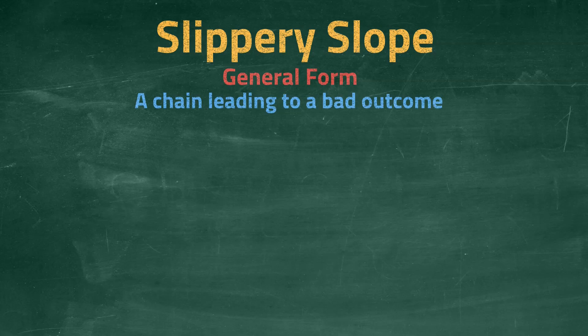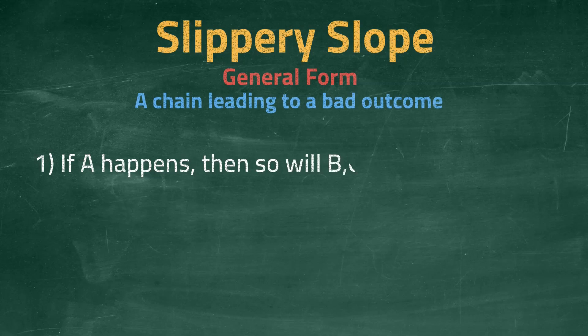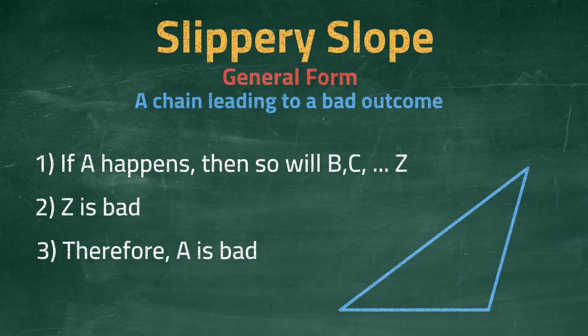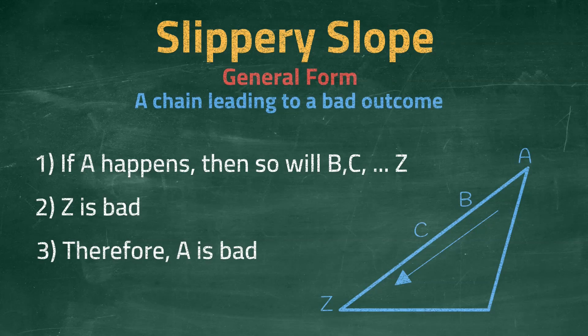The general form is as follows: if A happens, then so will B, C, D, and so on, all the way to Z. Z is bad. Therefore, A is bad. We should not do A, because it will lead to Z, which is bad. We call it the slippery slope because we begin with A at the top of the slope, Z at the bottom, and all the other intermediary points in between. By accepting A, we fall down this slope and end up with Z.